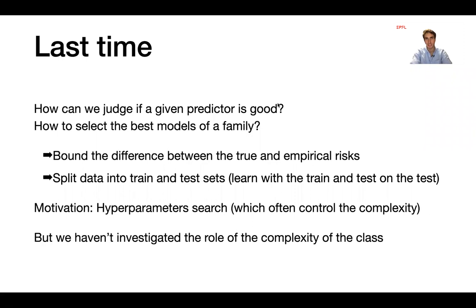Last time we saw that it was possible to assess if a given function was a good predictor or not, and we discussed how to choose the best out of a finite number of models. We saw that it was possible to bound the difference between the true risk and the empirical risk, which led us to the idea of splitting the data into a train set and a test set. The main motivation was the problem of hyperparameter search — for example, controlling lambda in front of the regularization to control model complexity.